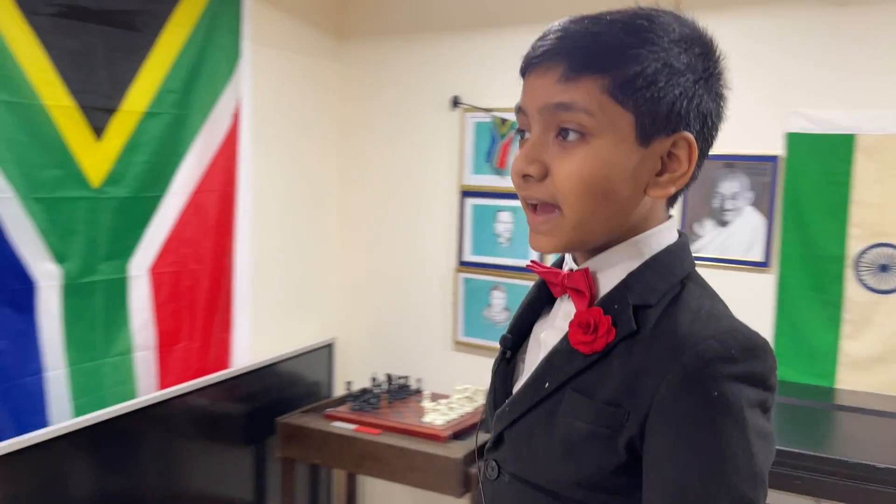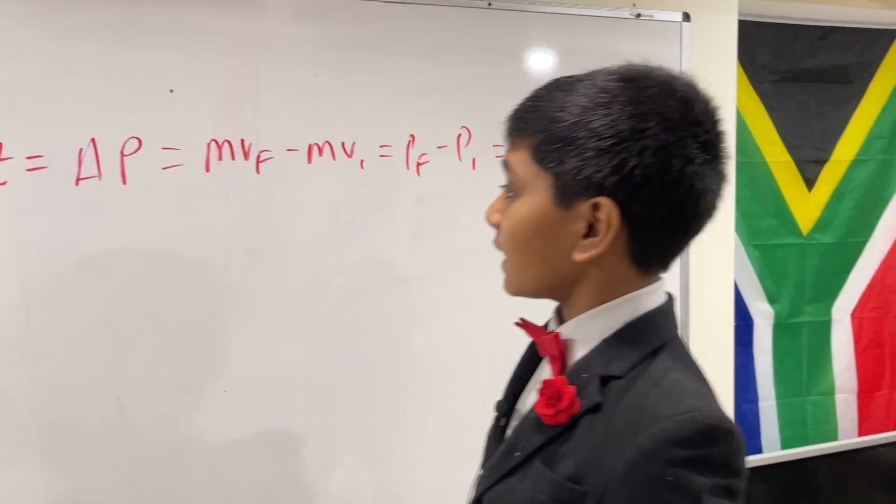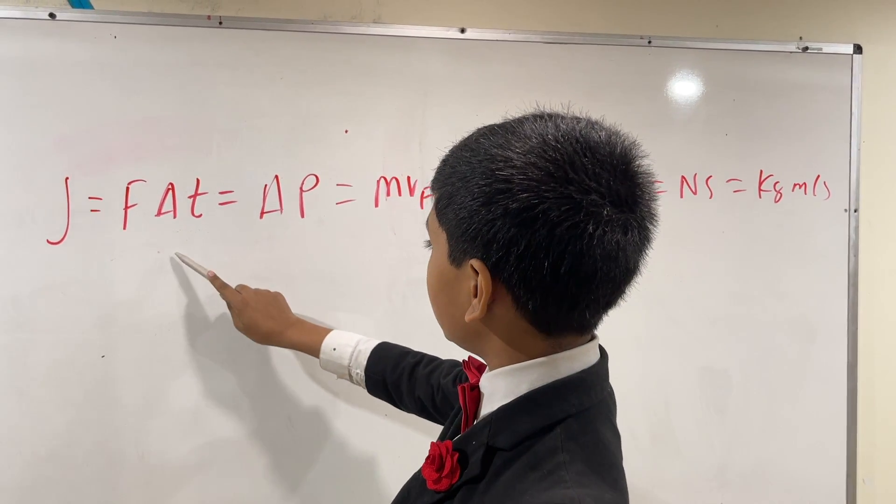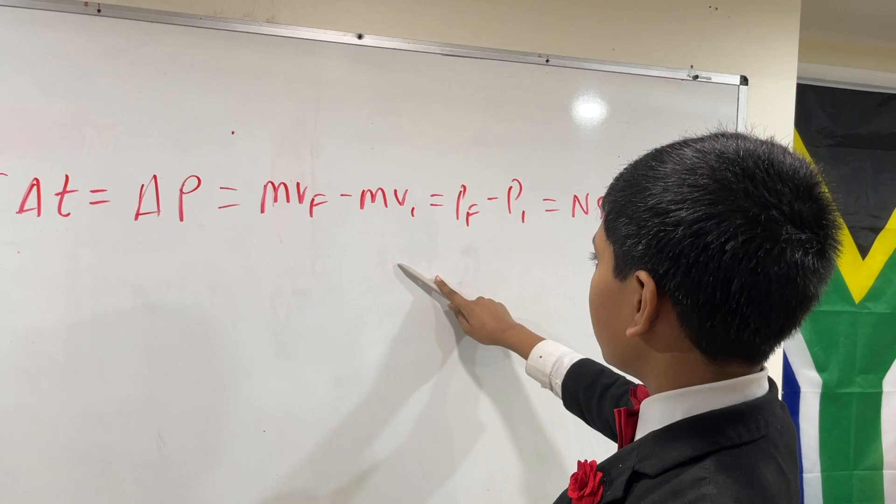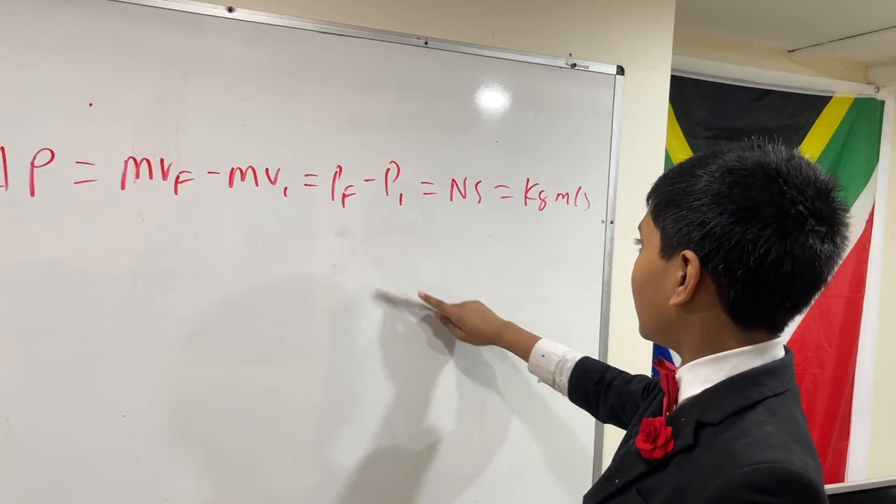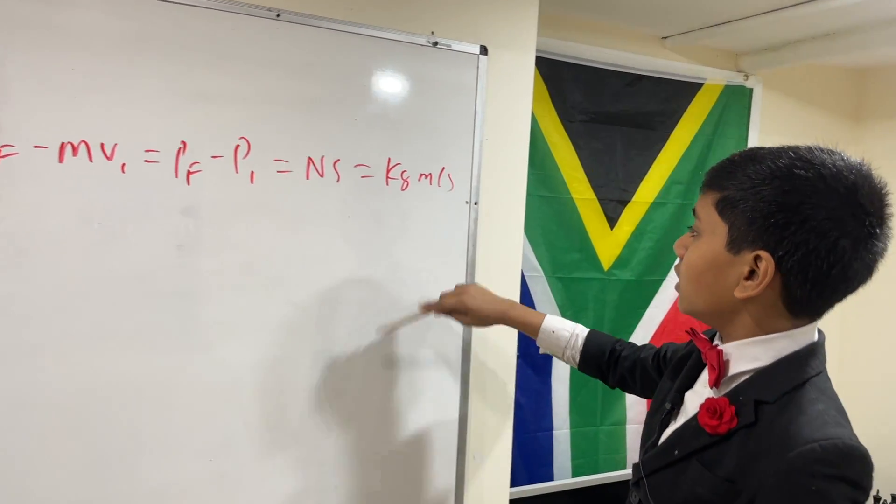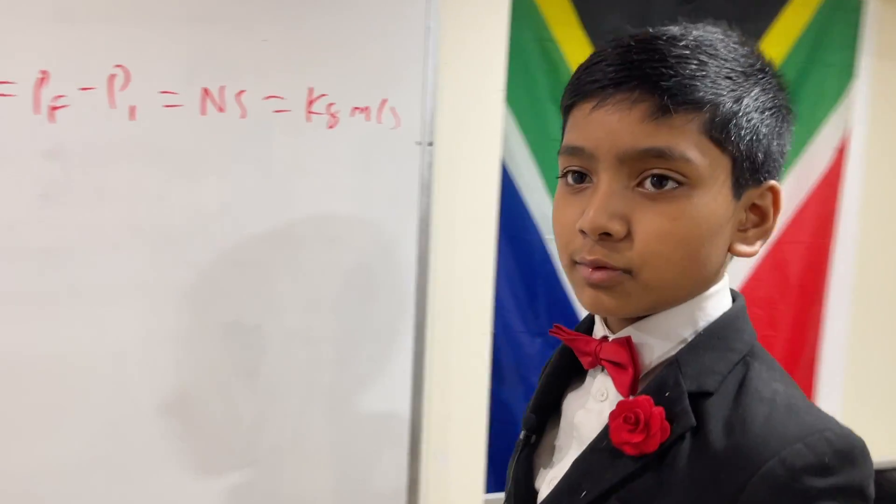Here's Sean Clapp, and today I'm going to show you that impulse is equal to f delta t is equal to delta p is equal to mvf minus mvi is equal to pf minus pi is equal to a newton second, which is equal to a kilogram meter per second.